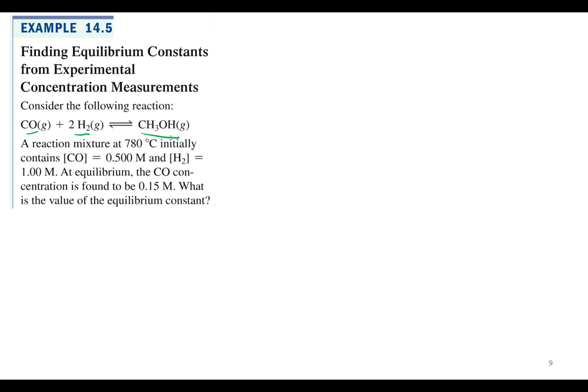The reaction mixture at 780 degrees Celsius initially contains CO and hydrogen at those concentrations. At equilibrium, the CO concentration is 0.15. Now, we've got to backtrack. I said we're going to find equilibrium concentrations using K. We'll do that in a couple. First, we're going to find equilibrium constants from initial and equilibrium concentrations, because after reading this problem, that's what we're going to do.